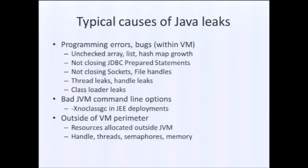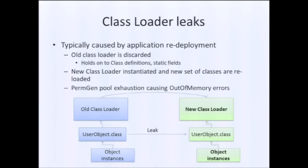Class loader leaks are particularly interesting. You can have an old class loader with a specific set of classes and static fields loaded in the PermGen pool. As you redeploy, you create a new class loader with a new set of classes also stuffed into PermGen. If you keep creating new class loaders, you end up with a leak and your application server falls over. If you're not watching this appropriately, your application server suddenly falls and goes out of service.